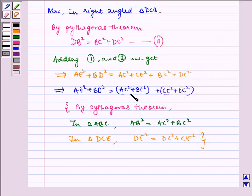This equation becomes AE square plus BD square is equal to AC square plus BC square, which can be replaced by AB square, plus CE square plus DC square, which can be replaced by DE square.